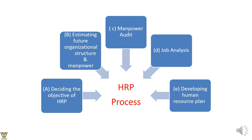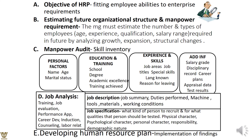There are basically five HR planning processes: deciding the objective of HR planning, estimating the future organizational structure and manpower requirement, conducting a manpower audit to assess what people are required, performing job analysis, and developing the human resource plan. Right from deciding to developing the plan — that is the HR planning process.